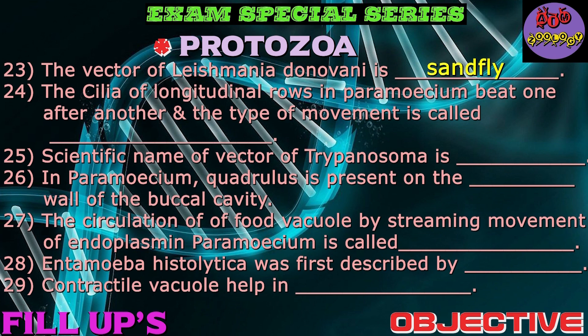Question number twenty-four: The cilia of longitudinal rows in Paramecium beat one after another and the type of movement is called? Answer: Metachronal rhythm. Question number twenty-five: Scientific name of the vector of Trypanosoma is? Answer: Glossina palpalis.